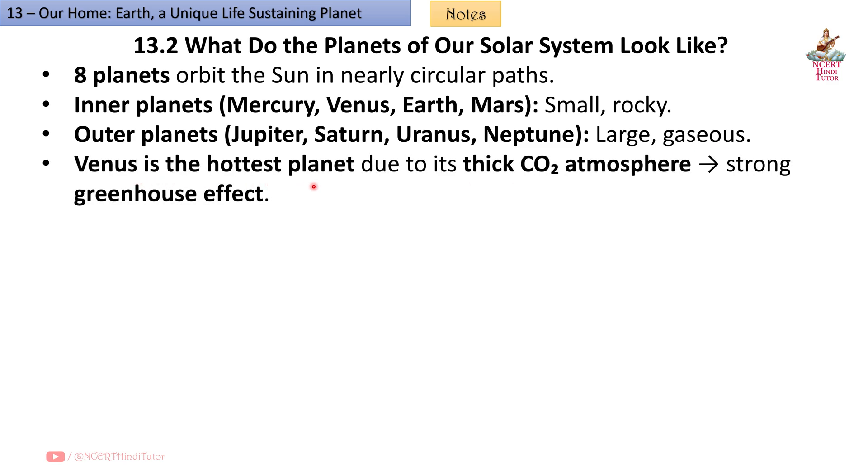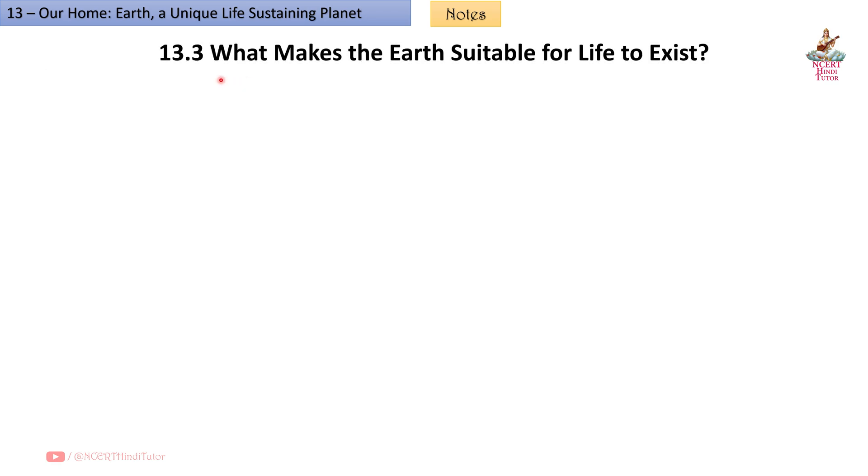Venus is the hottest planet due to its thick CO2 (carbon dioxide) atmosphere, resulting in a strong greenhouse effect. Earth's greenhouse effect keeps temperature suitable for life. 13.3 What makes the Earth suitable for life to exist?